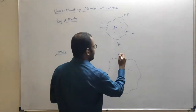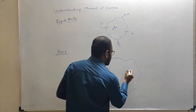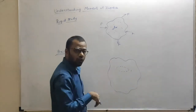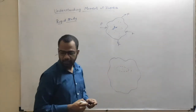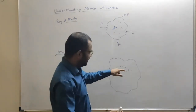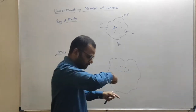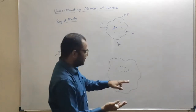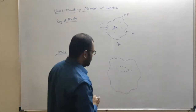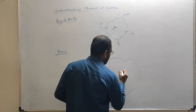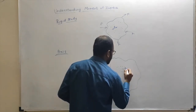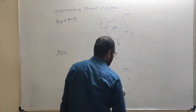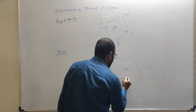Suppose this is the first particle; as the body performs rotational motion, this particle will perform circular motion whose center is somewhere here. This is a three-dimensional body — the plane of the circular motion is parallel to the floor. The radius of the first particle's circular motion is r1. If I take another particle — the second particle — it will also perform circular motion with its center here and a different radius r2.